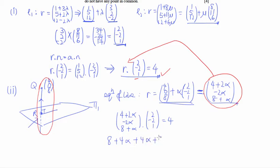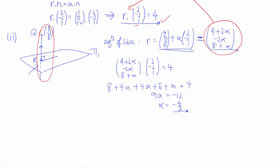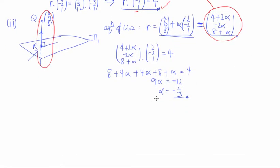Solving gives 9α = −12, so α = −4/3. This is the alpha value — not the point R itself, but it helps us find R. We now substitute this alpha value back into the equation of the line.